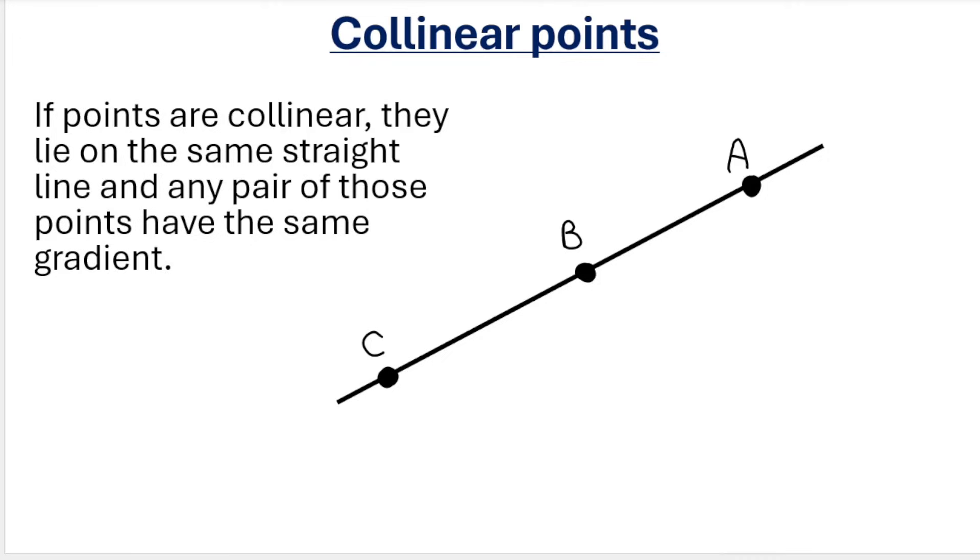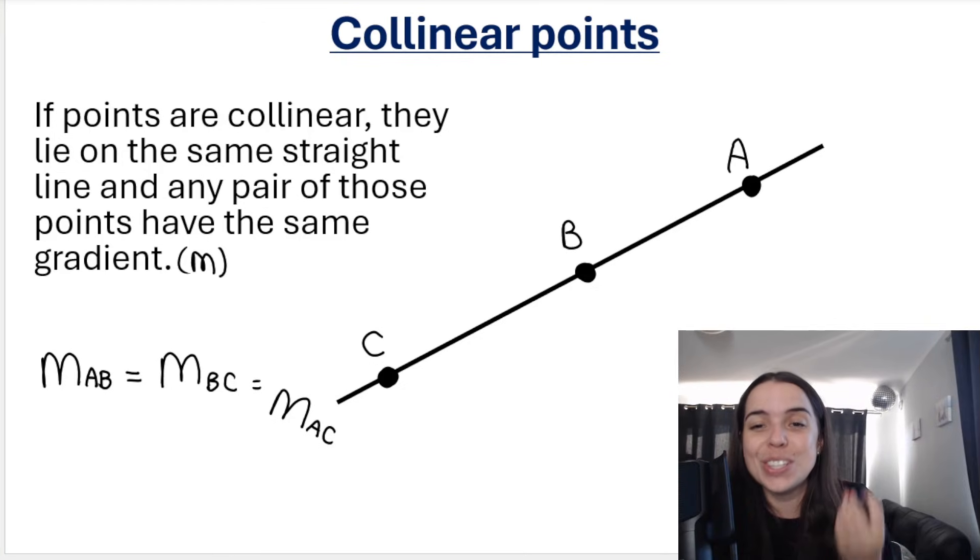So what I mean is, if I had to work out the gradient of AB—remember, small m represents gradient—that would be equal to the gradient of BC, which would also be equal to the gradient of AC. All the gradients would be equal because they lie on the same straight line.